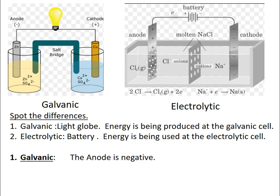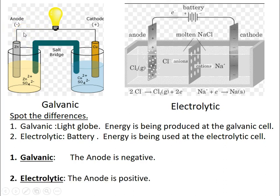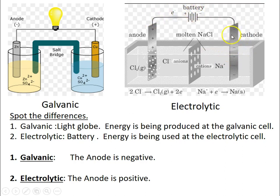Another way of working out if it's electrolytic or galvanic is to look at the anode and therefore the cathode as well. The anode in galvanic is negative, whereas in electrolytic it's positive. Normally electrons would spontaneously come from the negative anode, but if we're supplying the electrons, they are being forced in the opposite direction — going to the electrode undergoing reduction, which is the cathode.